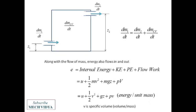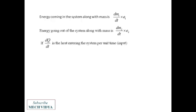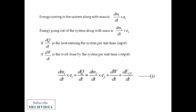Next, energy coming into the system along with the mass is d/dt of m1 into e1. This much amount of energy will flow into the system. Then energy going out of the system with the mass is d/dt of m2 into e2. e2 is the energy that is going out into the mass flow rate. Now if dQ by dt is the heat entering the system per unit time, that is, you can consider it as an input. Suppose I have given some amount of heat per unit time, and if the system after taking this heat does some amount of work at the rate of dW by dt, let it be output.